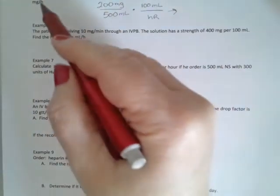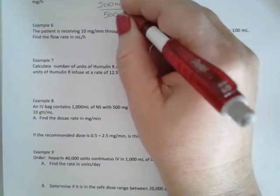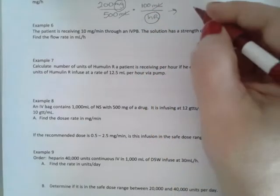We're looking for milligrams per hour. Milliliters cross out and we have milligrams per hour. Now we just have to do the multiplication.